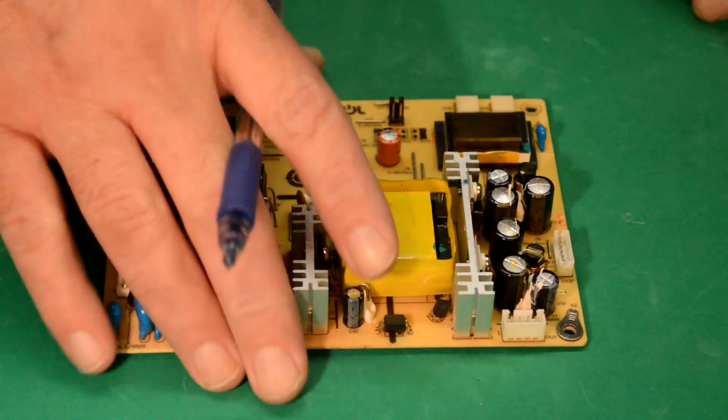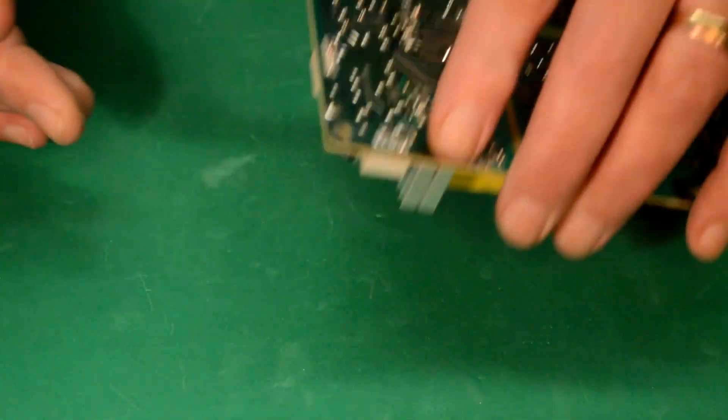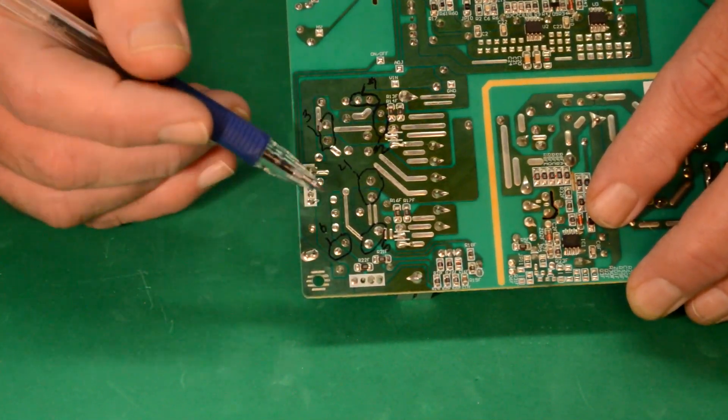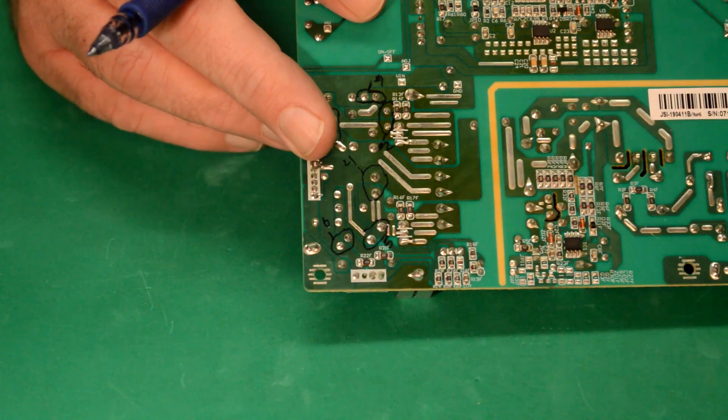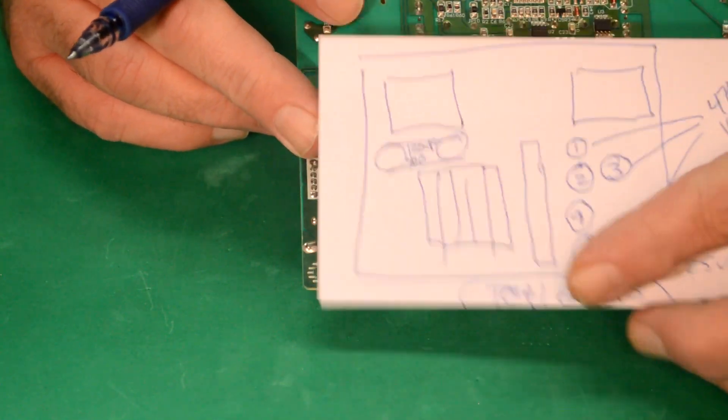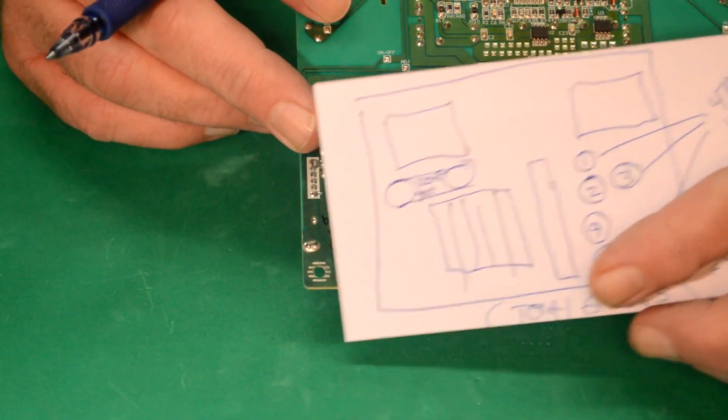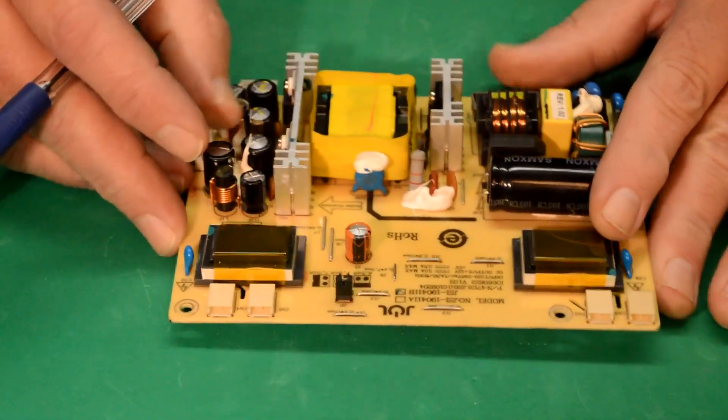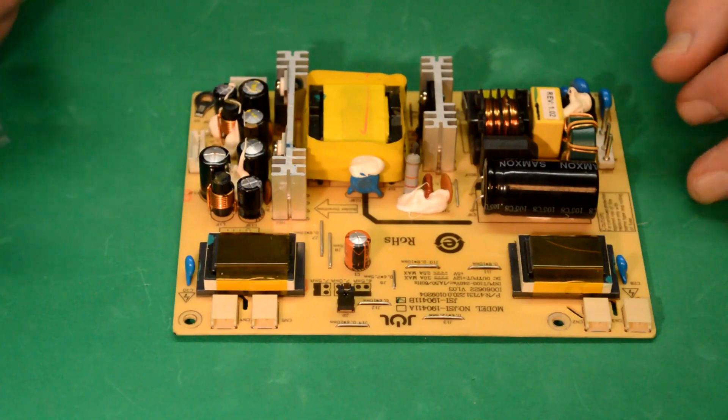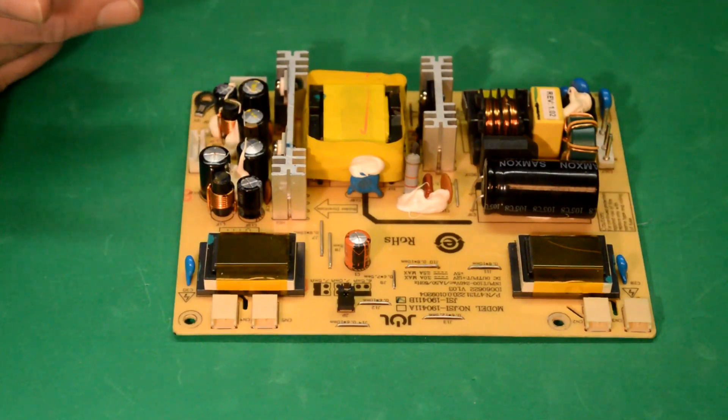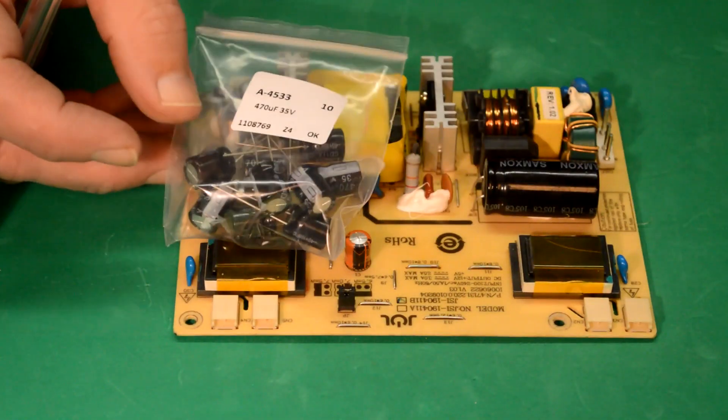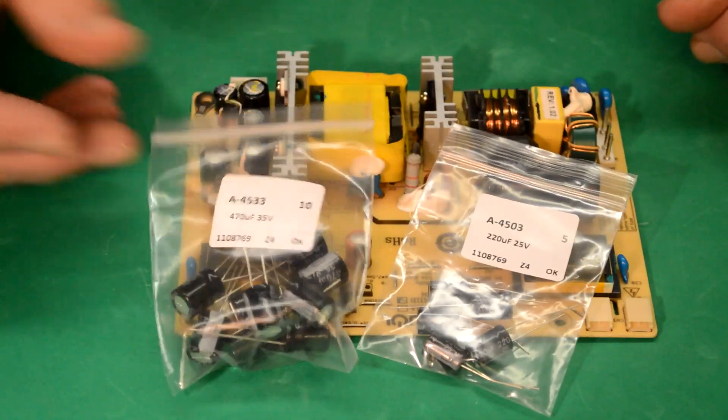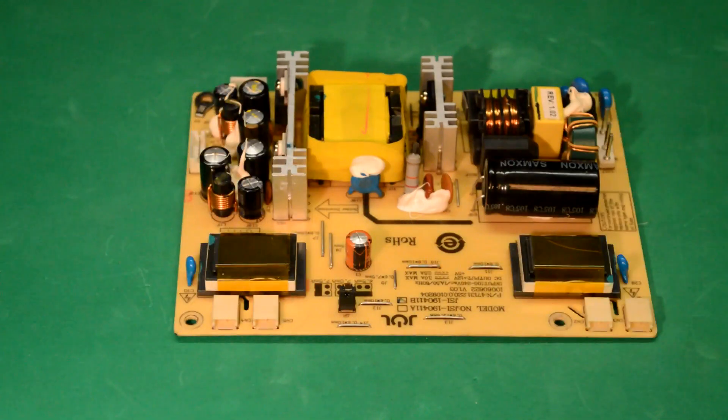So anyway, what I did is I located all the caps on the back, and I used a Sharpie, and I circled them, and I also numbered them. And then I made myself a little diagram, and it tells me what cap is where, and I've numbered them. So it just makes the process go a little bit smoother. I've got the replacement caps here. I've got enough to do them all, plus some, but again, we'll use the ESR tester and test them out.